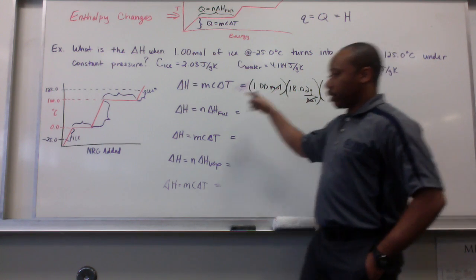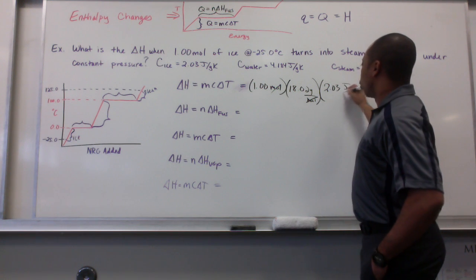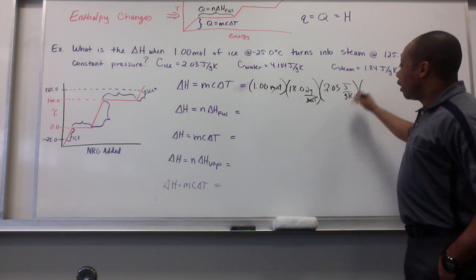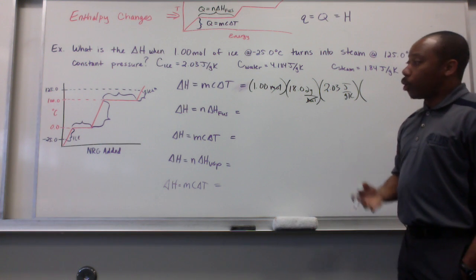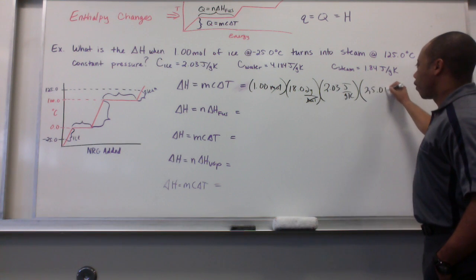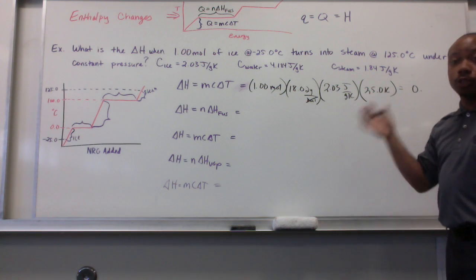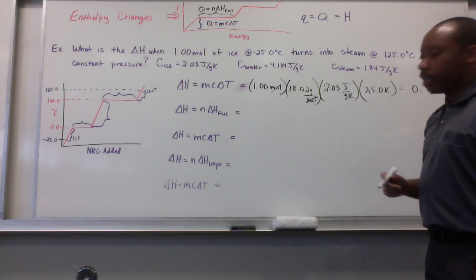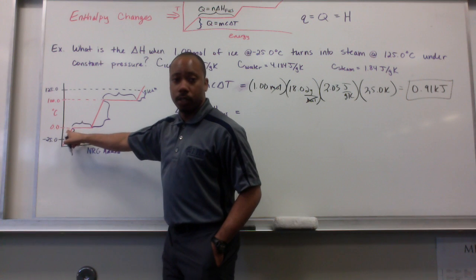My C for ice here, because I'm at negative 25 here, I'm starting here. Ice is at 2.03 joules per gram Kelvin. And my change in temperature needs to be in Kelvin, because this is in Kelvin, but we know Kelvin and Celsius are interchangeable. Just change the unit, really. So, from negative 25 to 0, we have T final minus T initial is going to give us a positive 25 Kelvin, which gives us, I'm going to change it to kilojoules just to save some time here, 0.91 kilojoules.